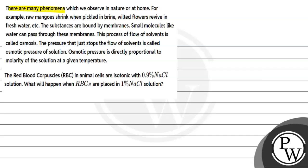Let's read the question. There are many phenomena which we observe in nature or at home — for example, raw mangoes shrink when pickled in brine, wilted flowers revive in fresh water. The substances are bound by membranes; small molecules like water can pass through these membranes. This process of flow of solvent is called osmosis. Osmotic pressure is directly proportional to the molarity of the solution at a given temperature. The red blood corpuscles (RBCs) are isotonic with 0.9% NaCl solution. What will happen when RBCs are placed in 1% NaCl solution?